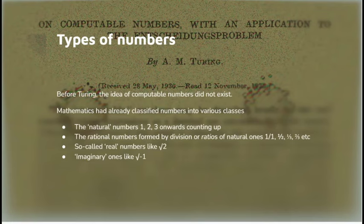So what does he say these computable numbers are? Before Turing, the class of computable numbers was not talked about. Mathematics had already classified numbers into a variety of classes. The natural numbers, 1, 2, 3, 4, etc., going upwards. The rational numbers formed by ratios or divisions of natural ones. 1 upon 1, 1 upon 2, 1 upon 3, 2 upon 3, etc.